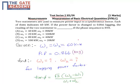If the power factor is changed to 0.866 lagging, the readings of the 2 wattmeters are — we have to find the values of W1 and W2 after the power factor is changed to 0.866 lagging.